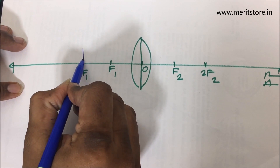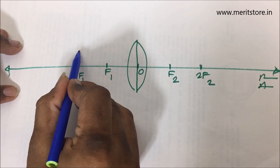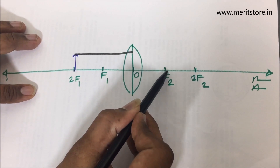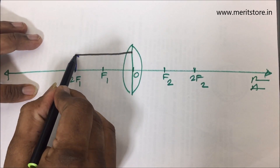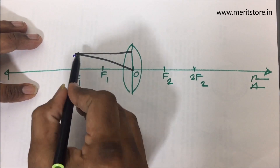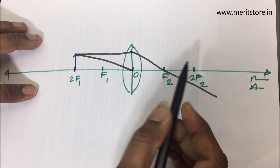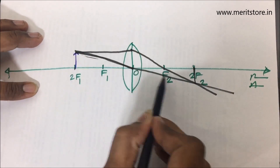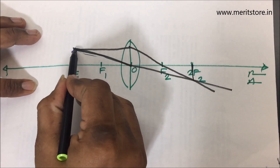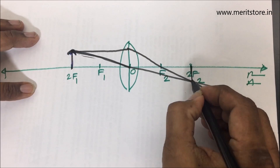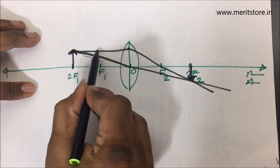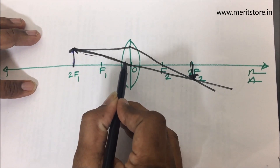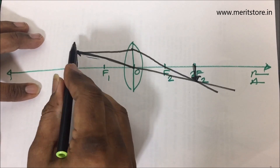The object is at 2f1, two lines tall. The first ray of light travels parallel to the principal axis and then goes through the focus. The second ray goes straight through the optical center undeviated. These two rays meet at a point on the other side of the lens — that's the image.